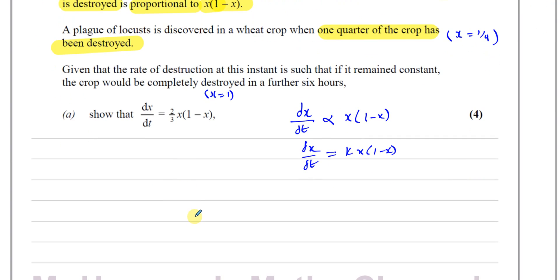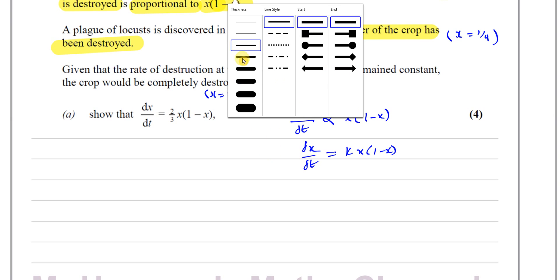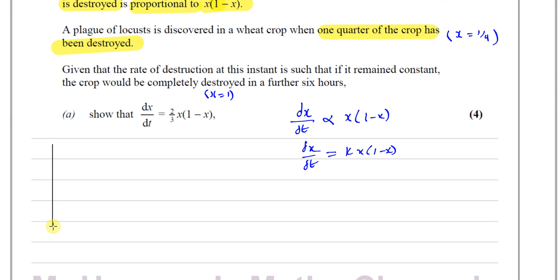Because they've told us the rate of destruction is such that the crop will be completely destroyed in the next 6 hours if it remained constant, I'm going to make a little graph to illustrate what's happening. So x here is the proportion of the crop being destroyed. When x equals a quarter, that's after a certain amount of time — we don't know what that time is.